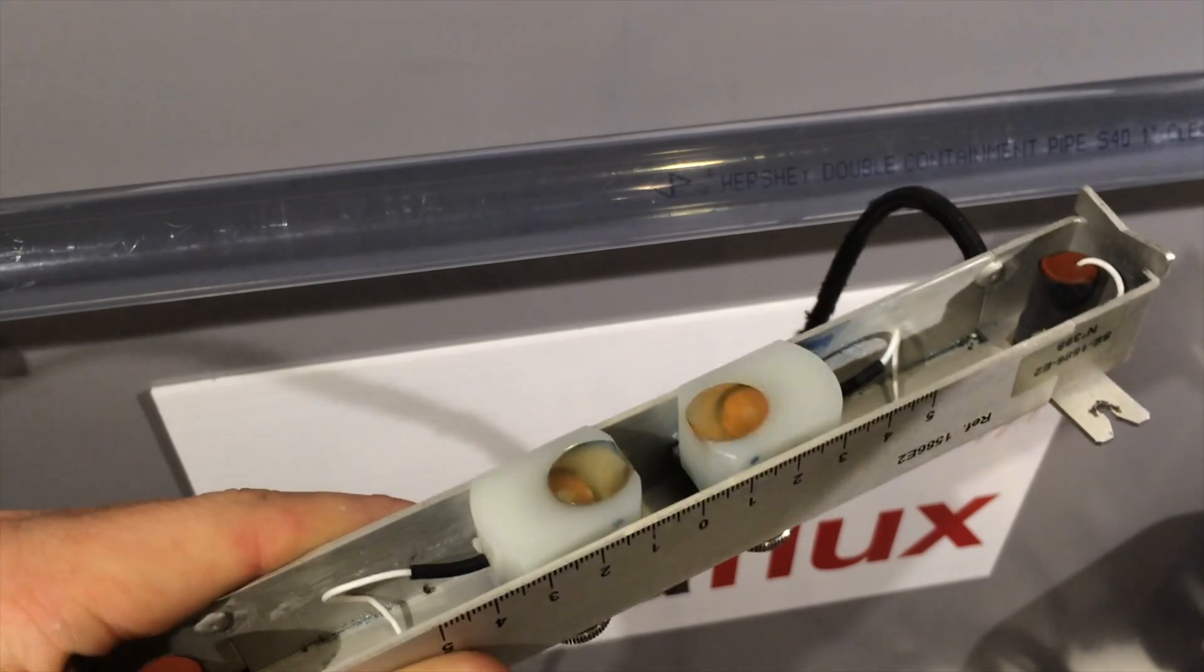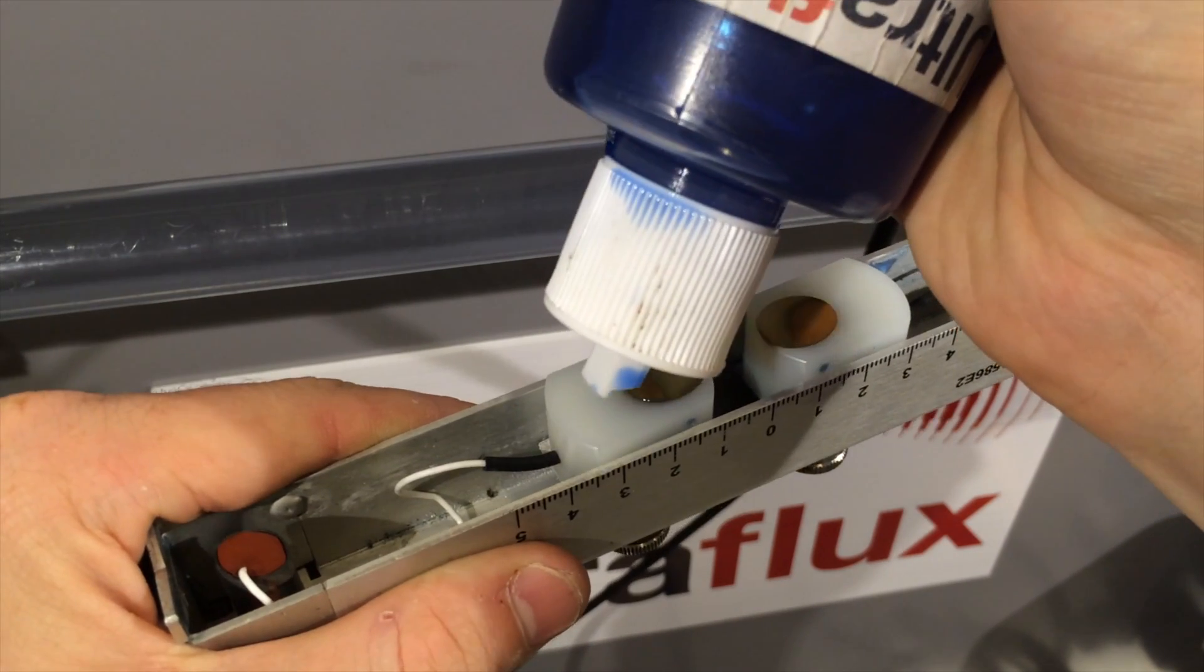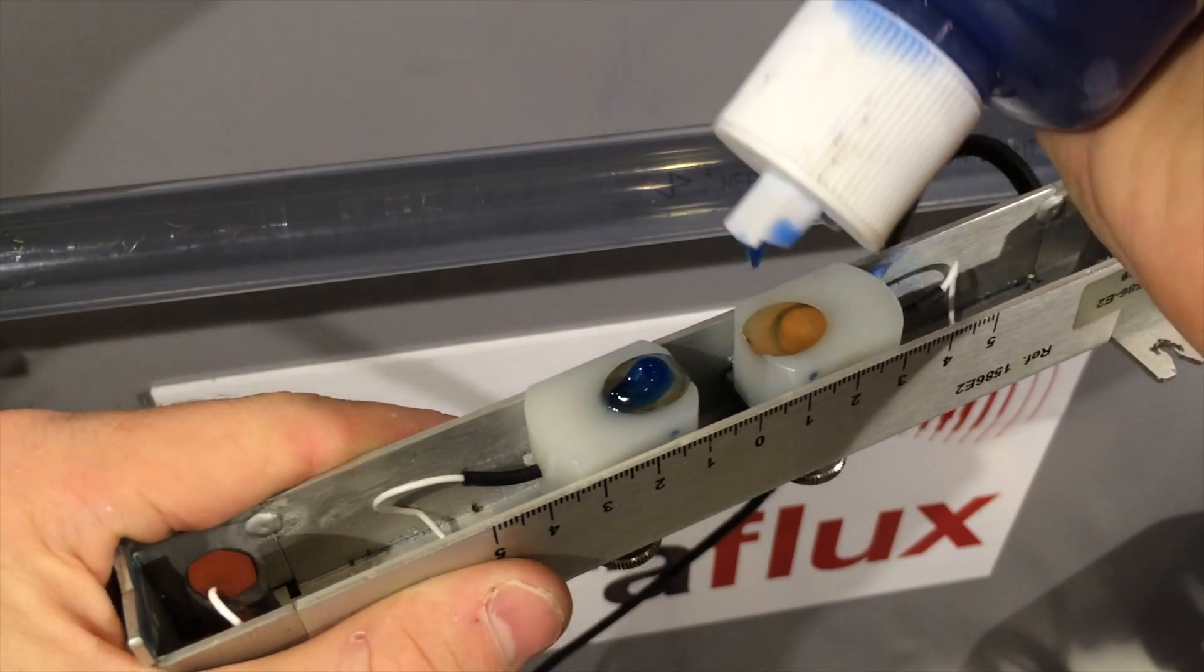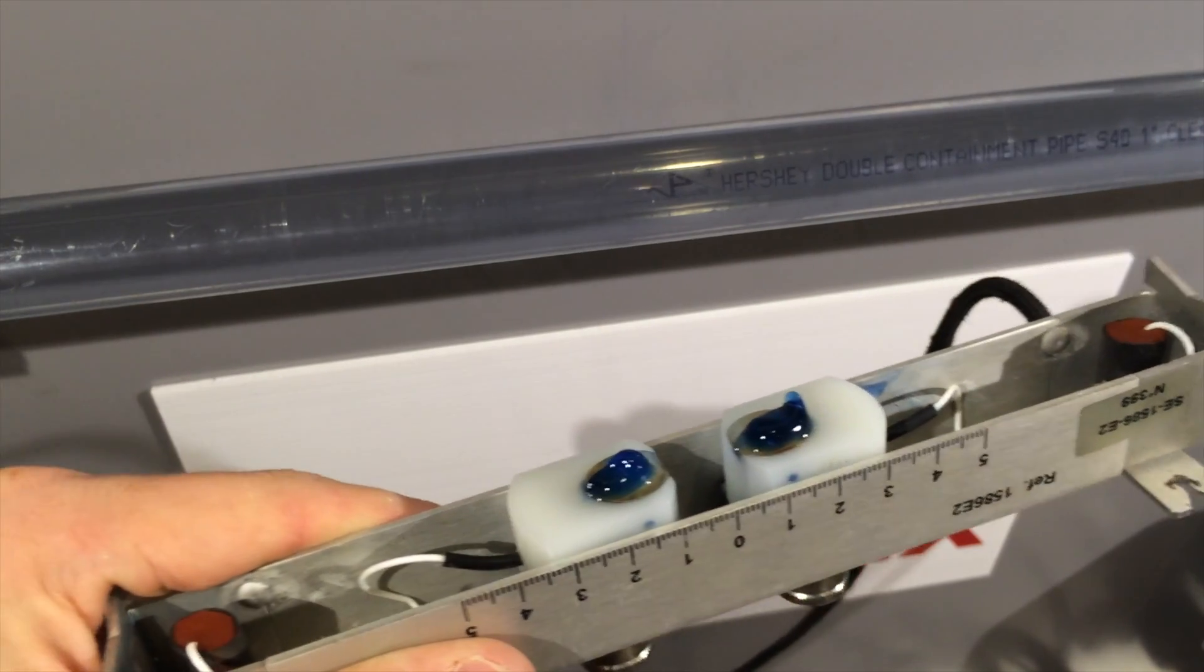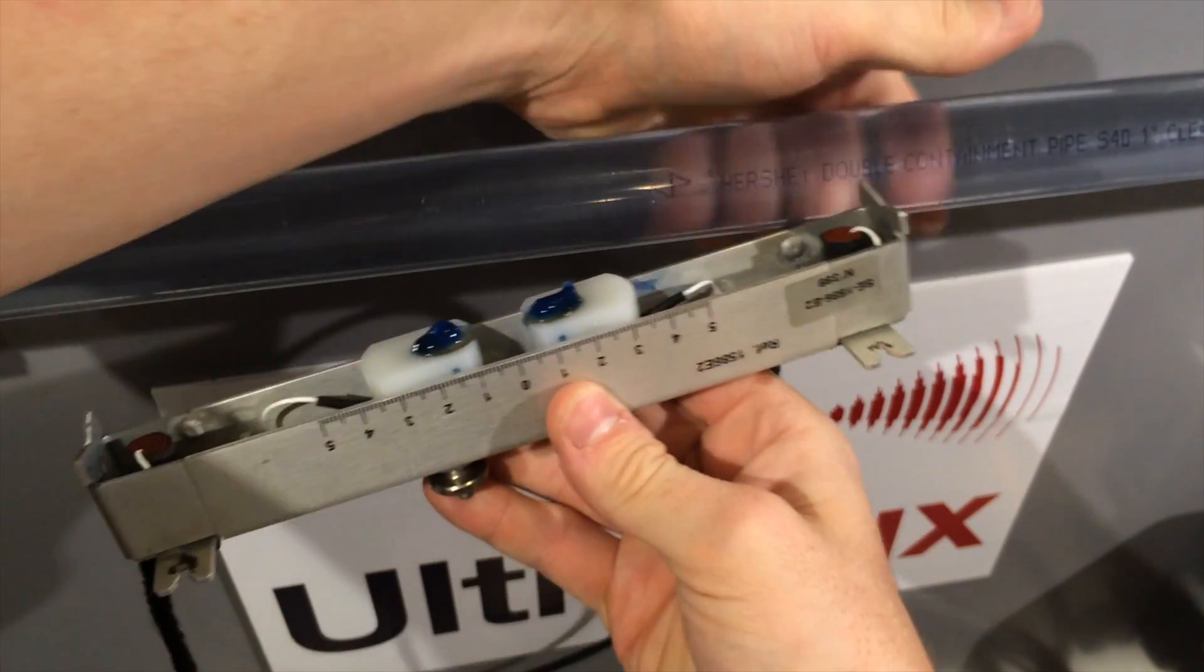Apply some coupling gel on the probe surfaces. Place the kit on the pipe and hold it firmly.